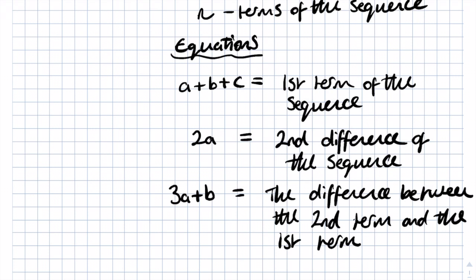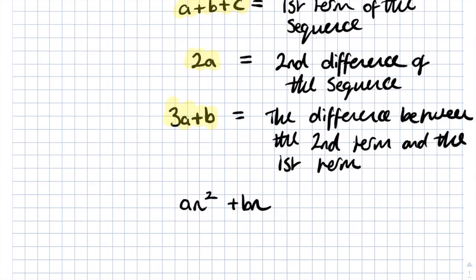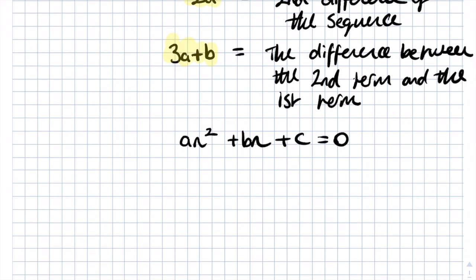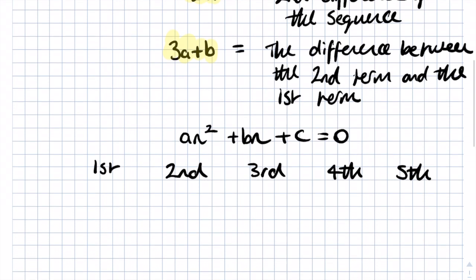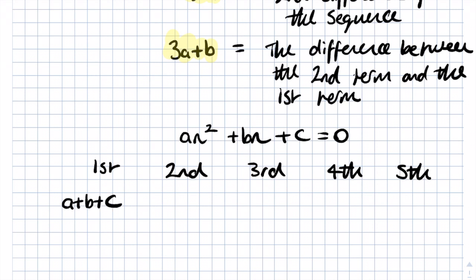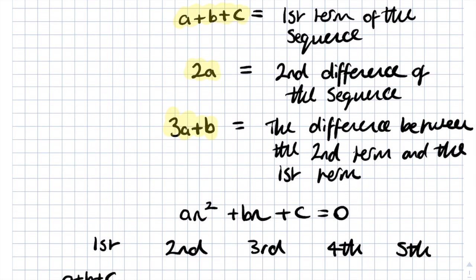Whenever you're doing these kinds of questions, make sure you memorize these equations. Now I'm going to show you how we arrive at these results. We take the equation an squared plus bn plus c equals zero and write out the first few terms. The first term is found by substituting n equals 1, which gives us a plus b plus c. And there we've already derived our first equation: the first term of the sequence equals a plus b plus c.